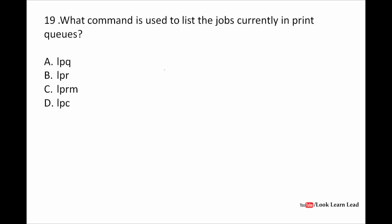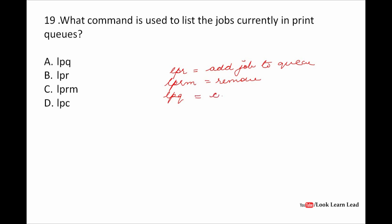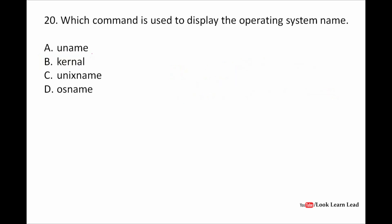Which command is used to list the jobs currently in the printing queue? We learned about three print queue commands: lpr means add job to the queue; lprm means remove a job from the queue; and lpq lists the current jobs in the queue. So the answer is lpq.